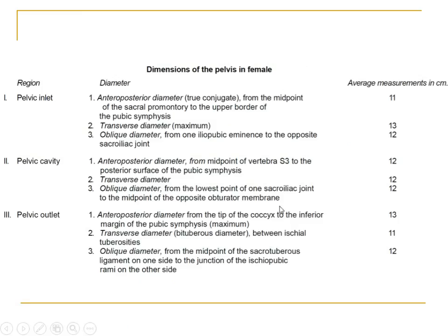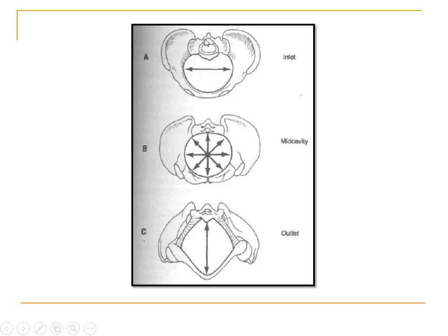To summarize: at the inlet, the anteroposterior diameter is 11 cm, oblique is 12 cm, and transverse diameter is 13 cm. At the mid-cavity every diameter is equal at 12 cm. At the outlet, the anteroposterior diameter is 13 cm, oblique is 12 cm, and transverse diameter is 11 cm. So at the inlet the transverse diameter is widest, at the mid-cavity every diameter is equal, and at the outlet the anteroposterior diameter is widest.